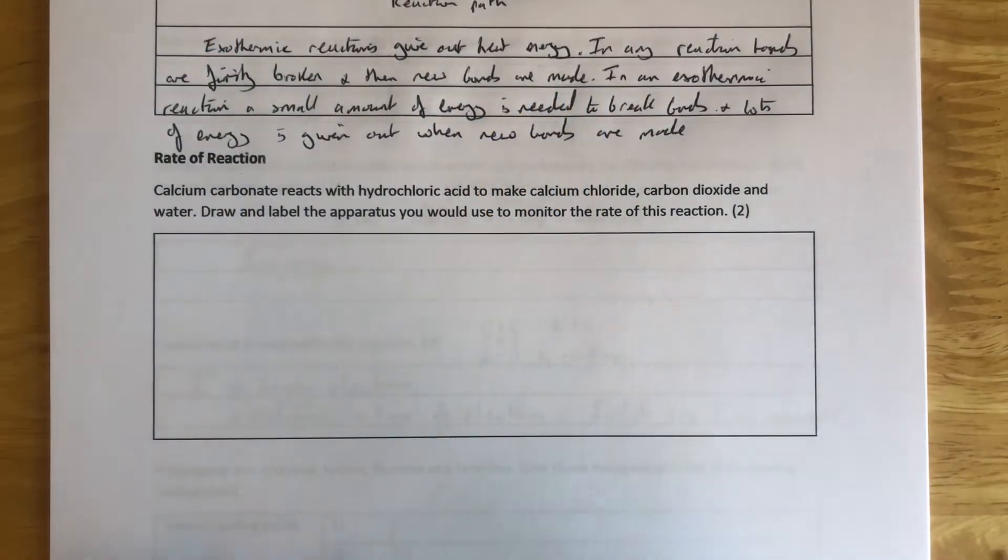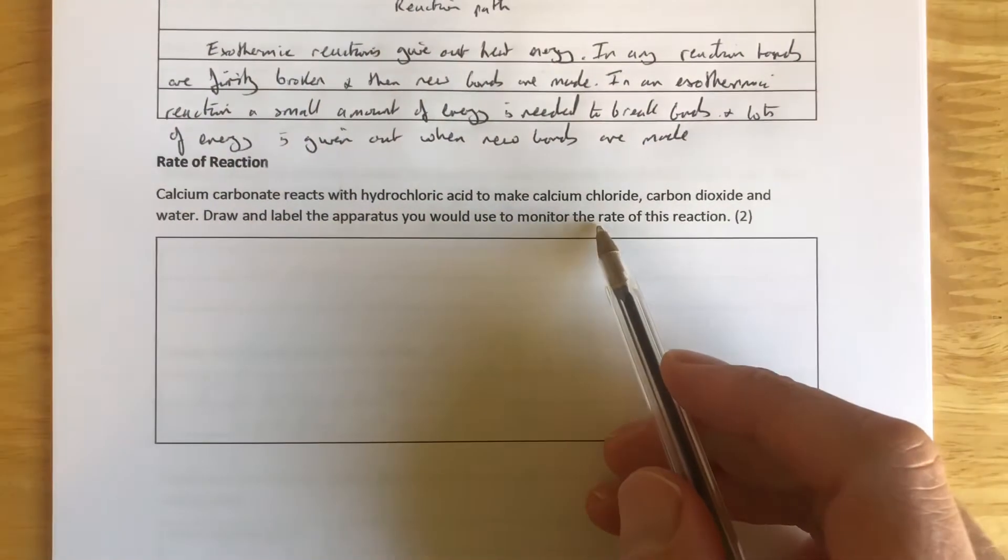Calcium carbonate reacts with hydrochloric acid to make calcium chloride, carbon dioxide, and water. Draw and label the apparatus you would use to monitor the rate of this reaction. So to monitor rate, we have to look at how quickly a reactant is used up or how quickly a product is produced.